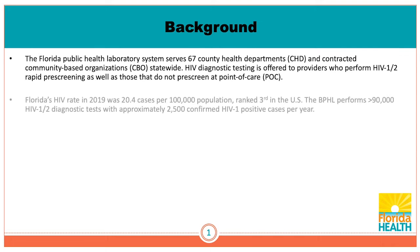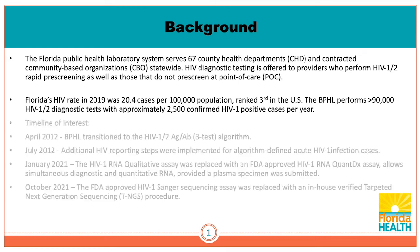Florida's HIV rate in 2019 was 20.4 cases per 100,000, ranked third in the US. Our laboratory performs more than 90,000 HIV 1-2 diagnostic tests — that's antigen antibody diagnostic tests — with approximately 2,500 confirmed HIV 1-positive cases per year. I've included a timeline of interest.